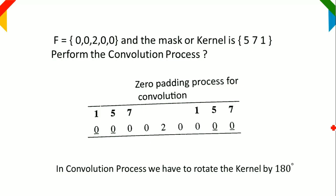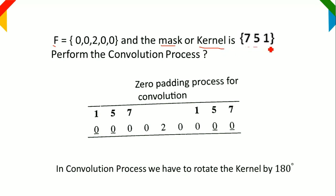Here is the problem: perform the convolution process for the image F, which is given as 0, 0, 2, 0, 0. It is of size 1×5, and we have to do the convolution process using the mask, kernel, or template, which is given as 7, 5, 1. This kernel is of size 1×3. So now we have to do the convolution process.